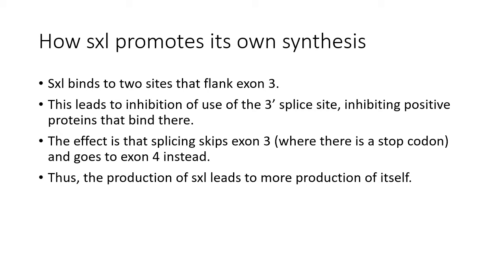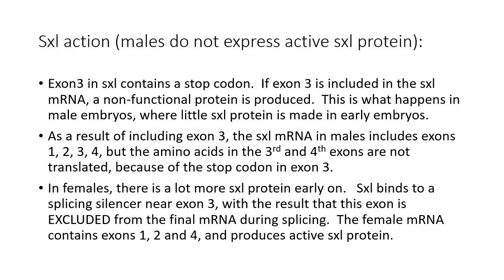As a result of this situation, the production of sex lethal leads to more production of itself, because we're talking about the splicing of its very own transcript. If exon 3 is included in the mRNA, you will produce a non-functional protein — males do that because they don't have a mechanism in place to skip exon 3, which has a stop codon in it. So the male form will have exons 1, 2, 3, and 4, but exon 4 is not translated because of the stop codon in exon 3. In females, we exclude exon 3, giving an active final mRNA that produces the active sex lethal protein.